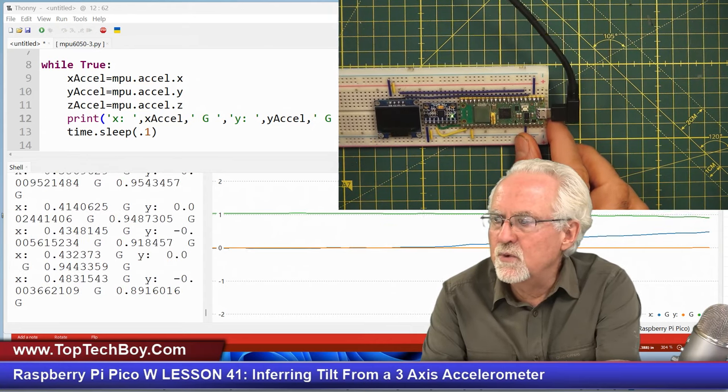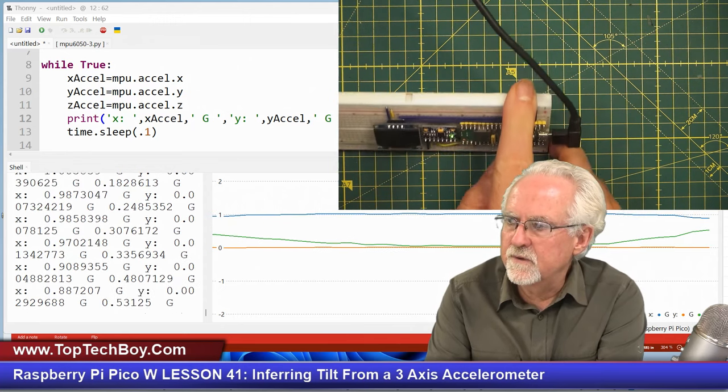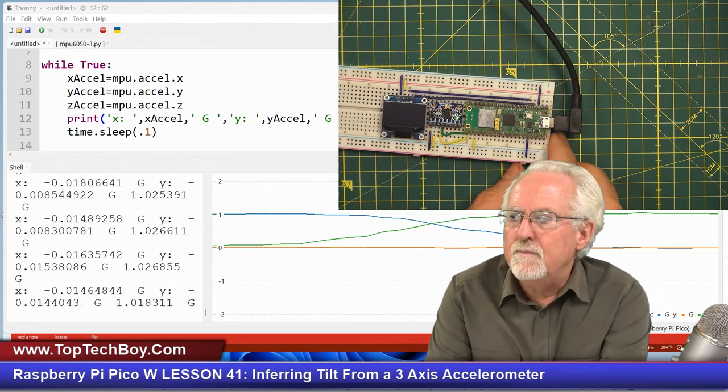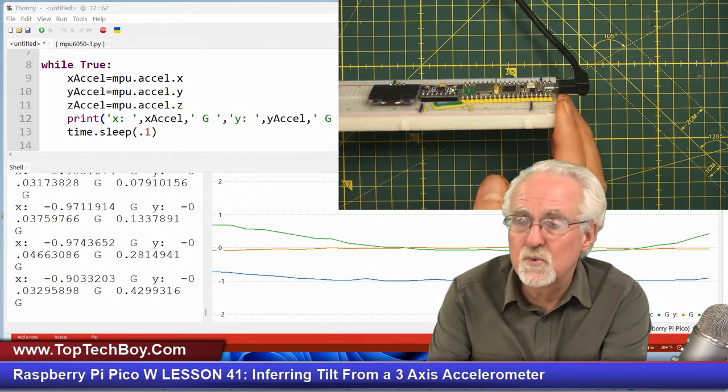I want you to watch that blue curve as I tilt. What does it do? It goes from zero to one. What if I tilt the other way? It goes from zero to minus one.